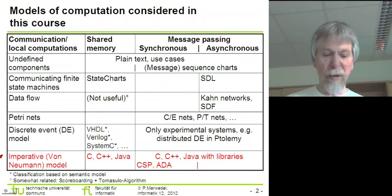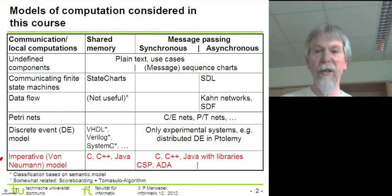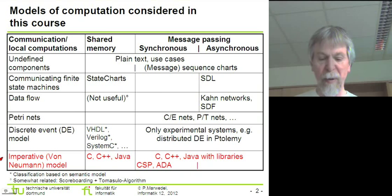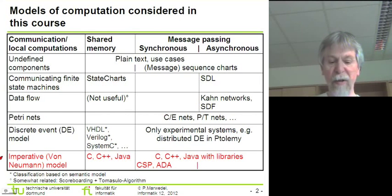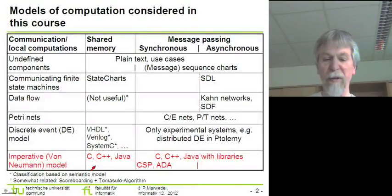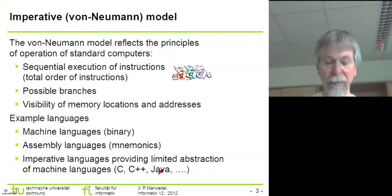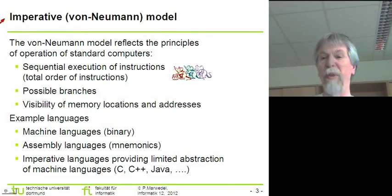The topic of this lecture today includes the last row in our table describing the structure of this chapter, and in addition I will also wrap up this chapter. So first I will talk about this last row, which covers the imperative or so-called von Neumann model of computation, where I will be covering particular languages using shared memory and message passing for communication.